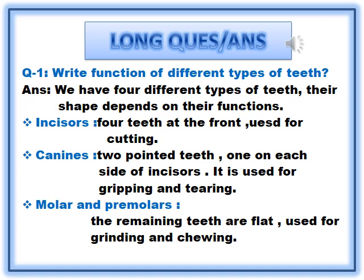Question number 1: Write the function of different types of teeth. Answer: We have 4 different types of teeth and their shape depends on their function. Incisors — 4 teeth at the front, used for cutting. Canines — 2 pointed teeth, one on each side of incisors, used for gripping and tearing. Molars and premolars — the remaining teeth are flat, used for grinding and chewing.